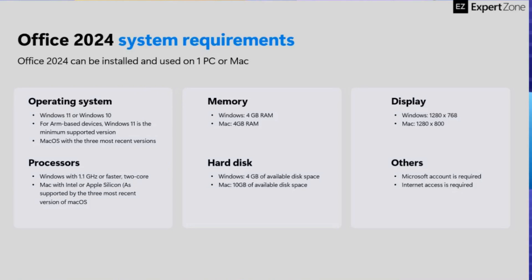For Office devices, at least Windows 11. For Mac OS, at least three of the most recent versions are compatible with Office 2024. For processor on Windows, at least 1.1 GHz — of course, higher is better. For Mac, Intel processor and Apple Silicon are supported, at least the three most recent versions of Mac OS. For RAM, both Windows and Mac require at least 4 GB. For storage, Windows requires at least 4 GB and Mac requires at least 10 GB.